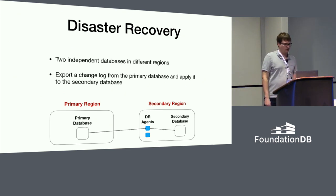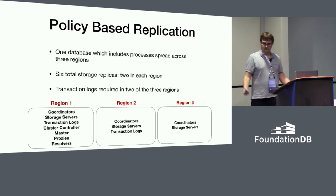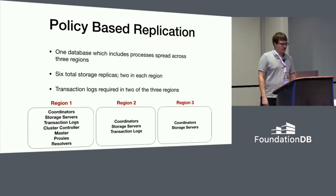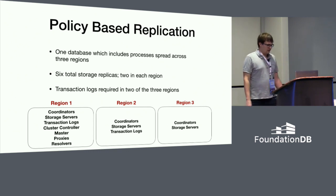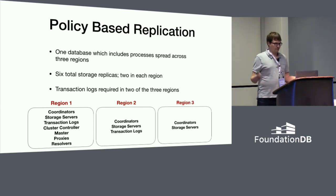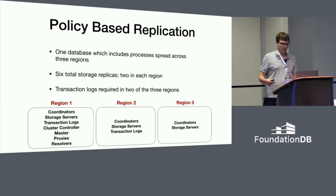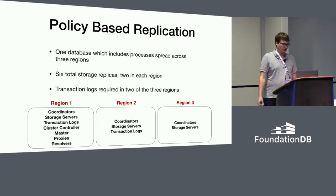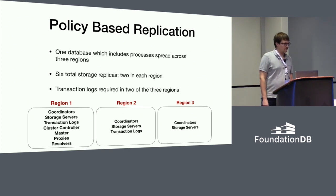This generally means we need to run with more replicas on both sides, which is obviously going to cost something. Our first attempt at doing something better was what was called three data center mode in the 5.0 releases, and it's still there in 6.0. The basic concept was to take FoundationDB and spread the processes across regions. This approach works, but it comes with some pretty big caveats. You're going to have three different regions, putting your transaction logs in two of the three regions and storage nodes across all of them — two storage replicas in each region for six total. Because we're synchronously replicating to multiple regions on the transaction logs, we can now survive a region failure with no data loss.